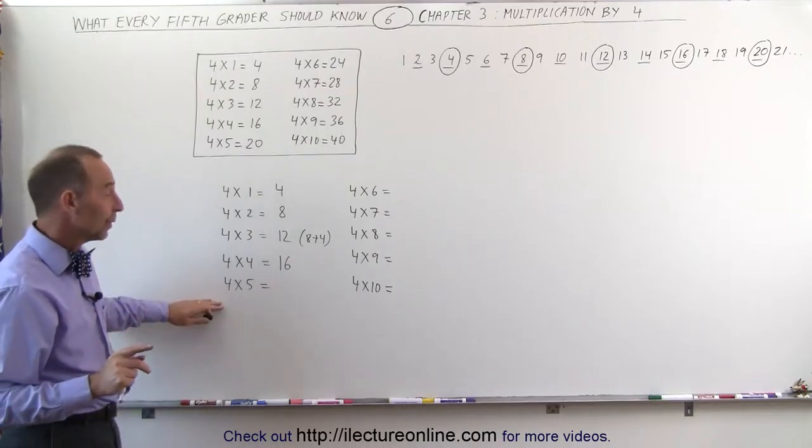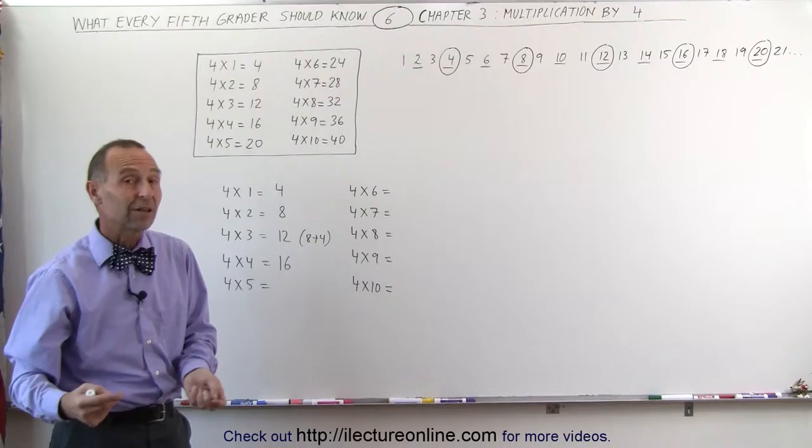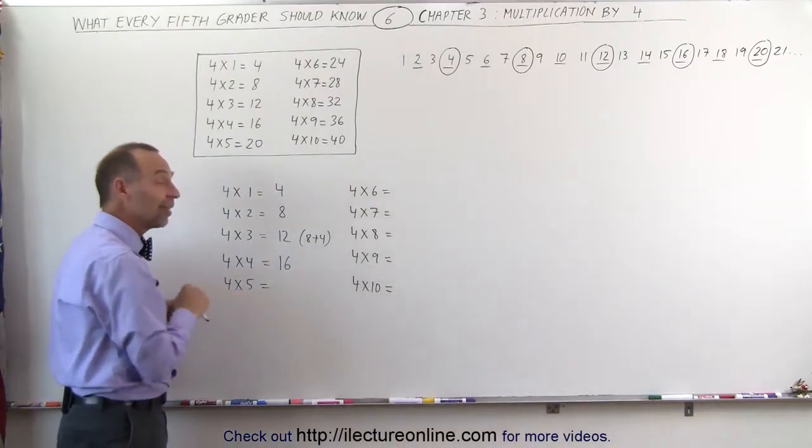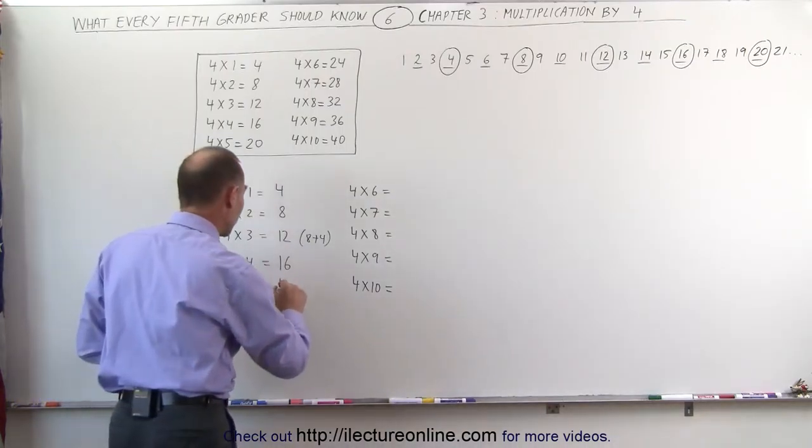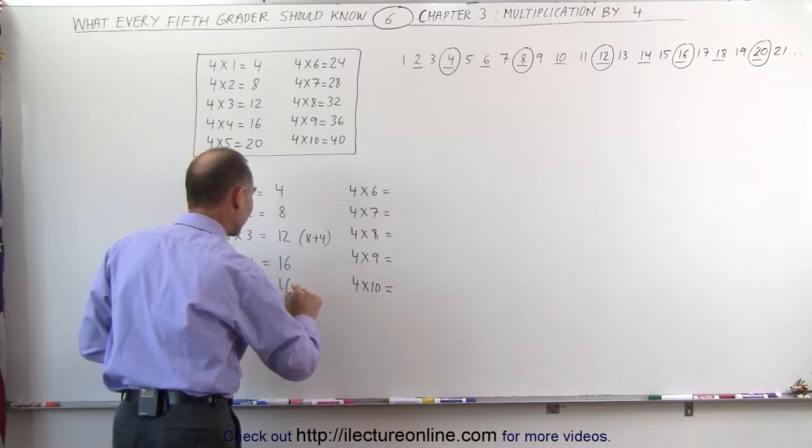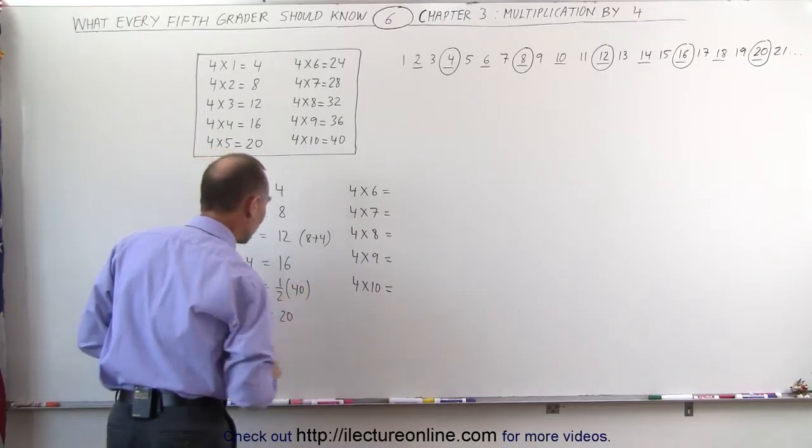4 times 5, well, that is half of 4 times 10. 4 times 10 is 40. 4 times 5, since that's the halfway point, that would be 1 half of 4 times 10, which is 40, so 1 half times 40, which is 20.